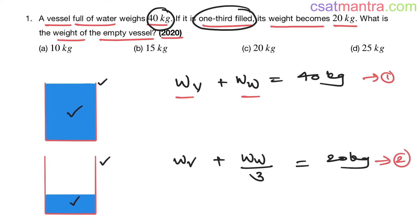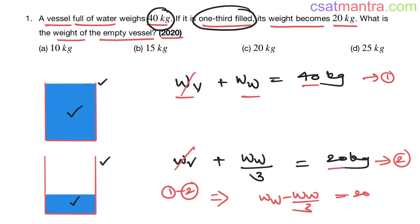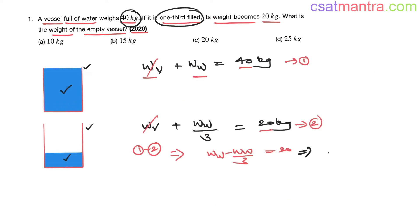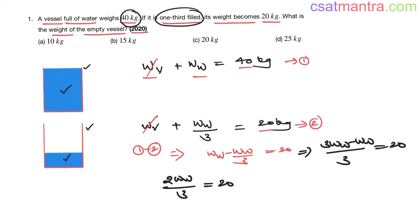Equation 1 minus Equation 2: the vessel weight cancels out. We get: weight of water minus weight of water divided by 3 equals 40 minus 20, which is 20 kg. Simplifying the left side: (3−1)/3 × weight of water = 20, so (2/3) × weight of water = 20.